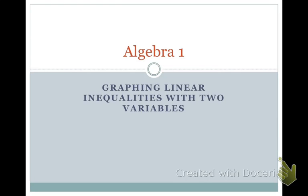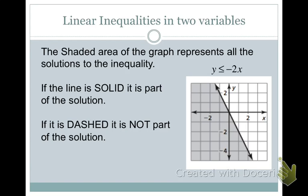We have solved and graphed inequalities in the past, but today we are going to graph linear inequalities with two variables, an X and a Y. When you have an inequality with two variables, you have multiple solutions, and we graphically represent those on a coordinate plane by using a shaded area. The shaded area represents all the potential solutions to the inequality.